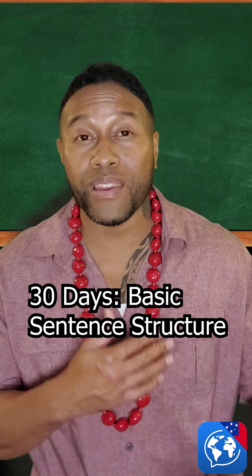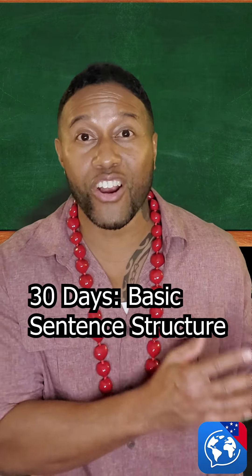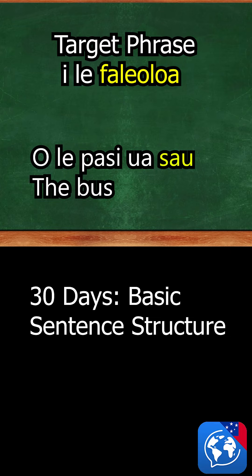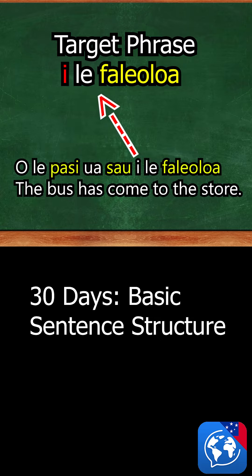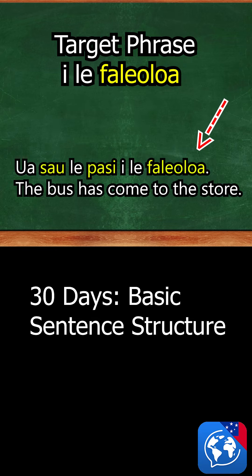Locations usually begin with one of many prepositional terms and contain a target noun. For example, 'to the store' is 'i le fale o loa'. Notice it looks like a noun phrase except it begins with the prepositional term 'i'. Once you know the individual phrase structure, you can rearrange 'o le pasi ua sau i le fale o loa' to 'ua sau le pasi i le fale o loa'.